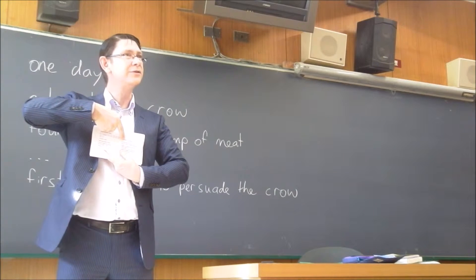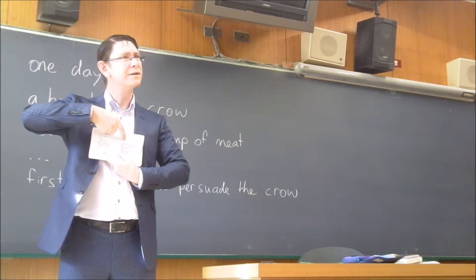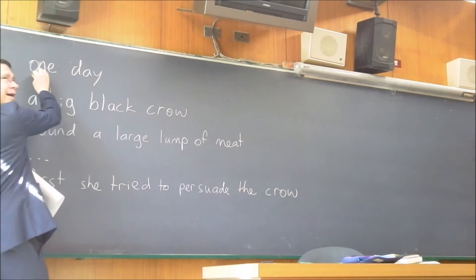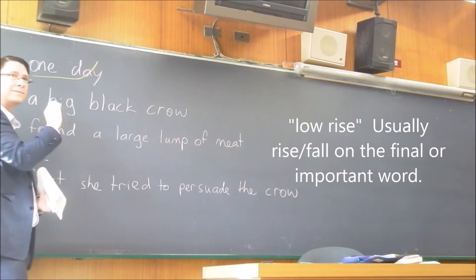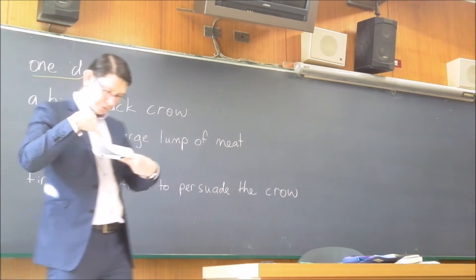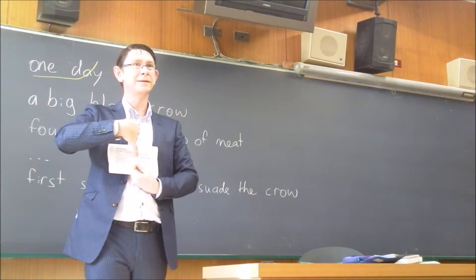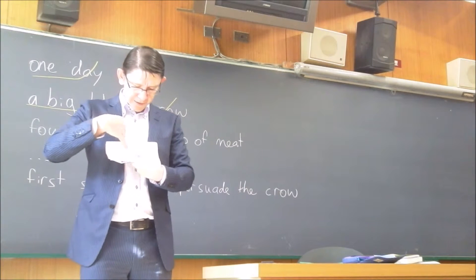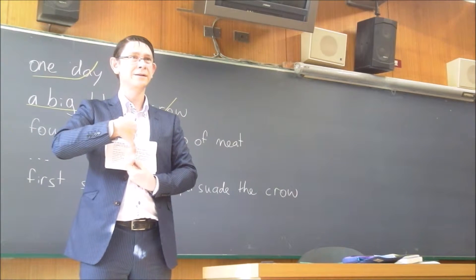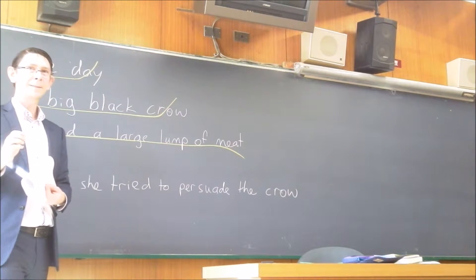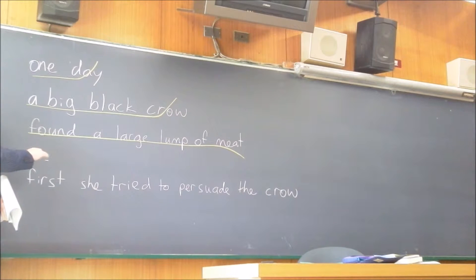Great. And so with the story, we have the first line: One day. And here it tells you what the voice does. What is it? Low, yeah, low rise. And so draw that as low and then rise. And then next one: A big black crow. What is it? Yeah, low rise, low then rise. Good. Low fall, low, low, low, low, low then fall.